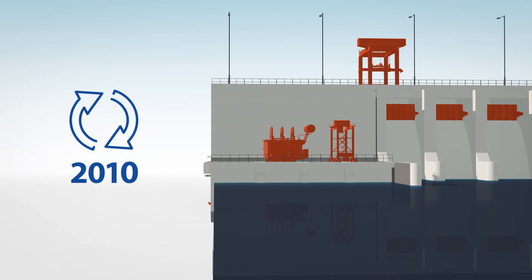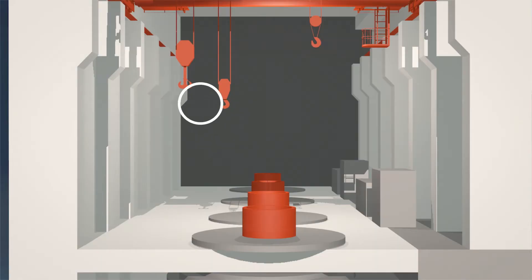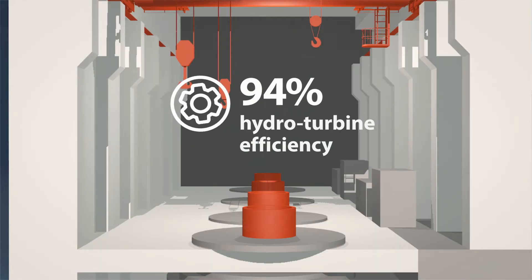The hydroelectric plant underwent reconstruction, completed in 2010. The plant's reliability was increased threefold, and its service life was extended by a quarter century. Its efficiency was improved as well. About 94% of the falling water is now used to produce electricity.